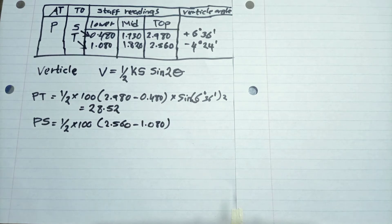So we do the same for PS, and we remember for sine 4 degrees 24 minutes, we find it and then multiply it by 2. So we get our answer 11.35.